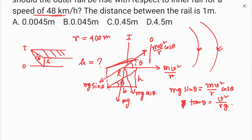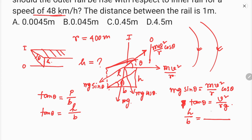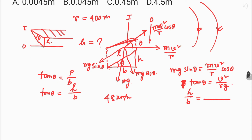So tan theta equals h over b, and equals v squared over rg. The radius is 400 meters. At 48 km per hour, we convert to meters per second by multiplying by 5 over 18, giving 40 over 3 meters per second.